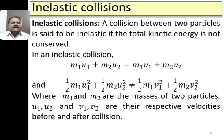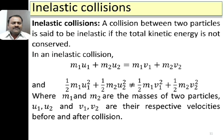A collision between two particles is said to be inelastic if the total kinetic energy is not conserved. Linear momentum is still conserved: m₁u₁ + m₂u₂ = m₁v₁ + m₂v₂. In an inelastic collision, the total initial kinetic energy ½m₁u₁² + ½m₂u₂² is not equal to the final kinetic energy ½m₁v₁² + ½m₂v₂², where u₁, u₂ are initial velocities before collision and v₁, v₂ are final velocities after collision.